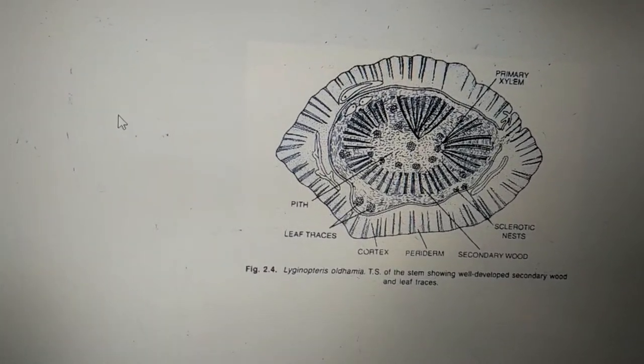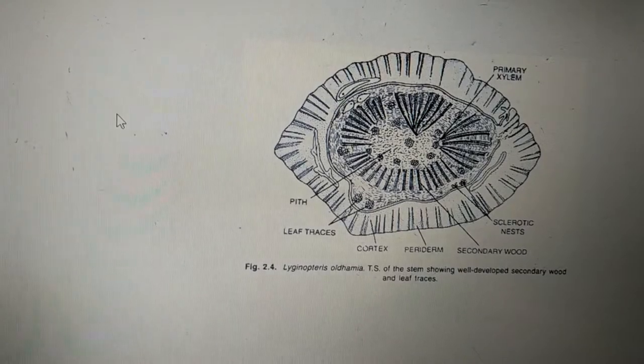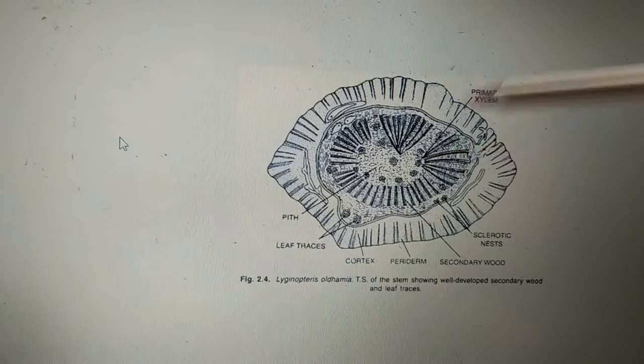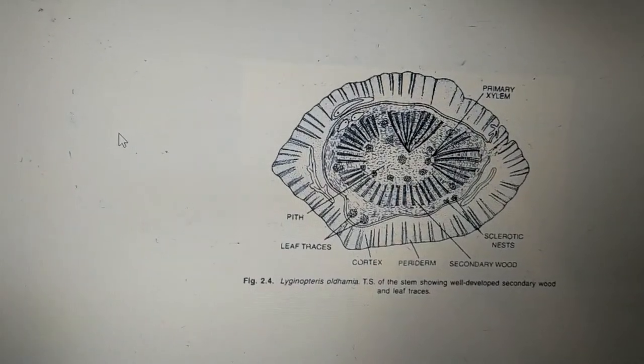Internally as well as externally to the protoxylem will be present metaxylem. Such condition of xylem is called mesarch, so we have a mesarch type of xylem in Lyginopteris.